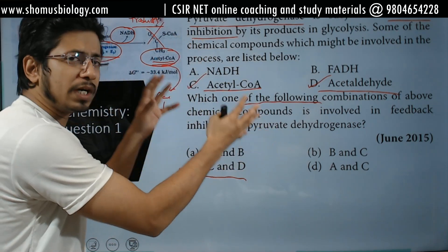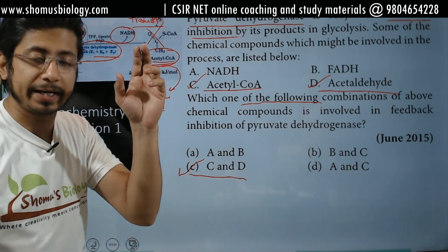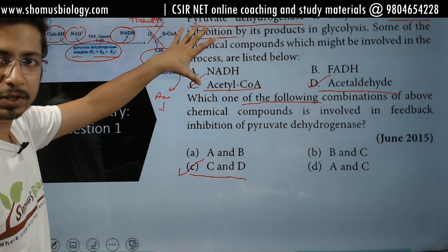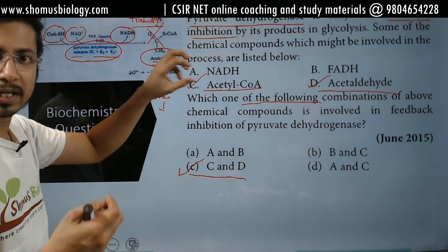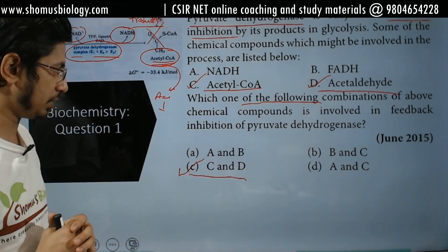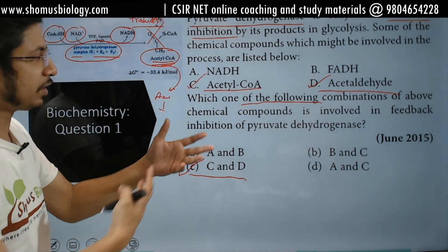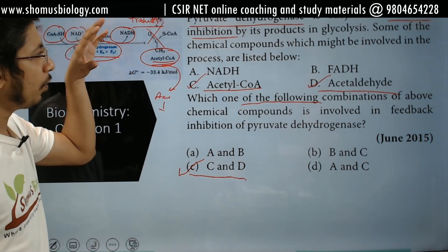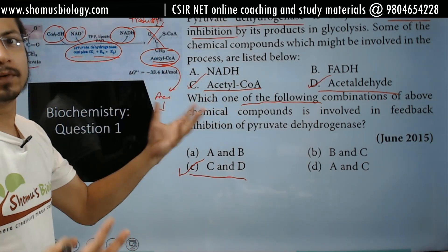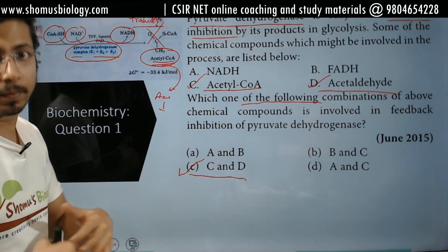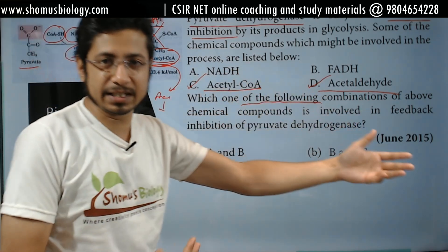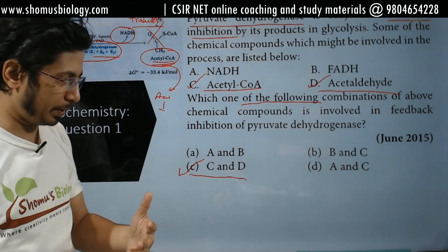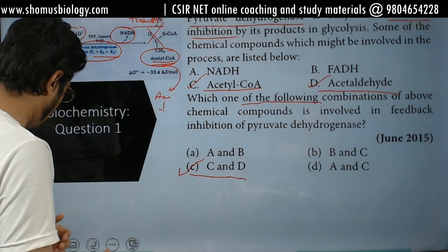This is the most asked type of question — 'which among the following is correct or not correct.' In this type of question, they always give you some information at the beginning. Once you go through the information, get the answer and find the correct combination. In this case, they could have asked a simple direct question — whether acetyl-CoA is a product of the pyruvate dehydrogenase reaction or not. But now the question is made complicated by giving extra information so that you invest more time reading before moving on.